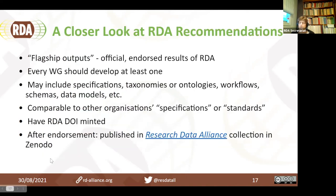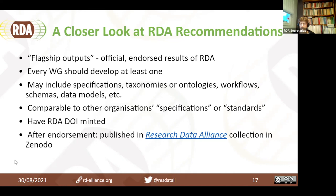RDA recommendations are what we call our flagship outputs — every working group should develop at least one. They can include specifications, taxonomies, ontologies, workflows, schemas, data models, etc. The main point is they're not just a report — they're actually meant to be things you could take and do things with. They're comparable to other organizations' specifications or standards. Each recommendation has an RDA DOI minted, showing it's been published by the RDA, and after endorsement they get published with an RDA cover page in the Research Data Alliance collection in Zenodo.